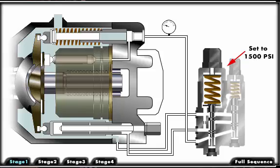Variable volume pumps can also be pressure compensated. A pressure compensated piston pump destrokes, or moves to zero output, at a predetermined pressure. This is accomplished by hydraulically positioning the pumping chambers to zero output while maintaining compensator pressure at the outlet of the pump.